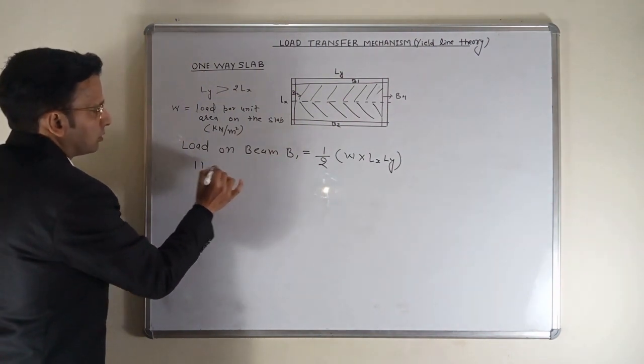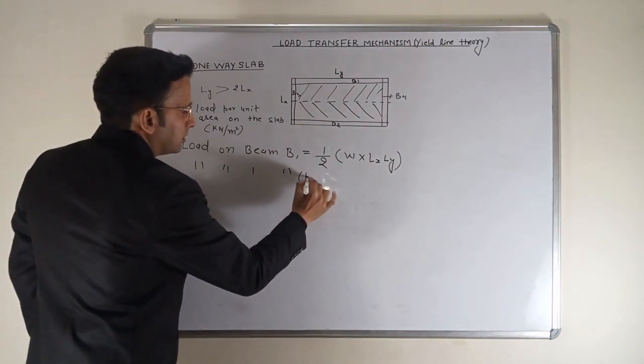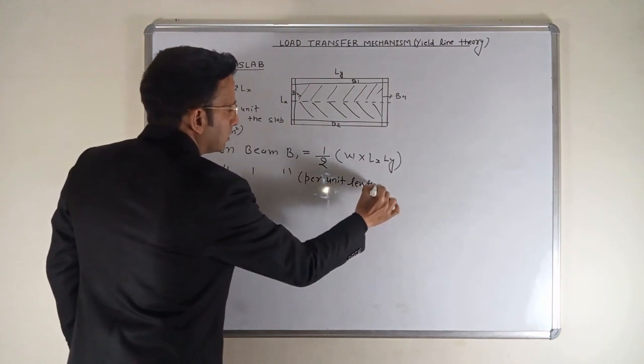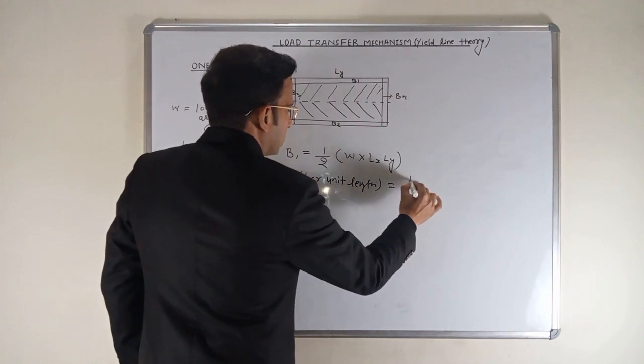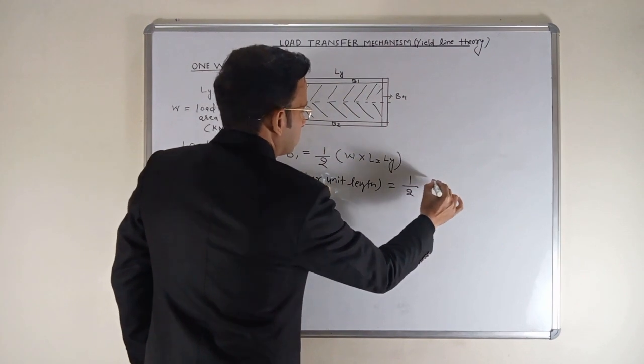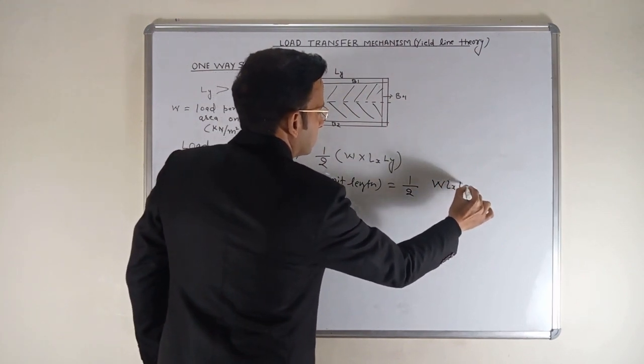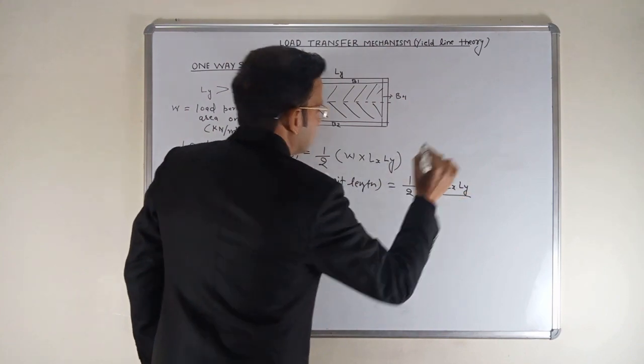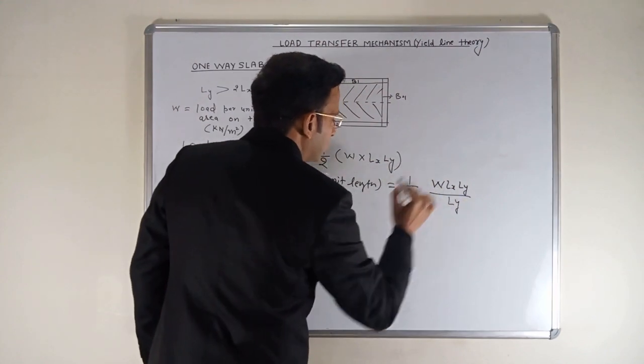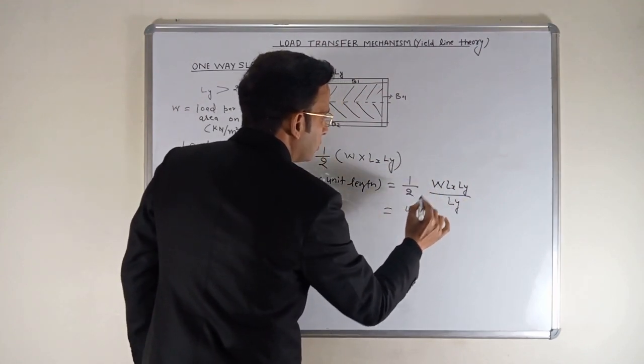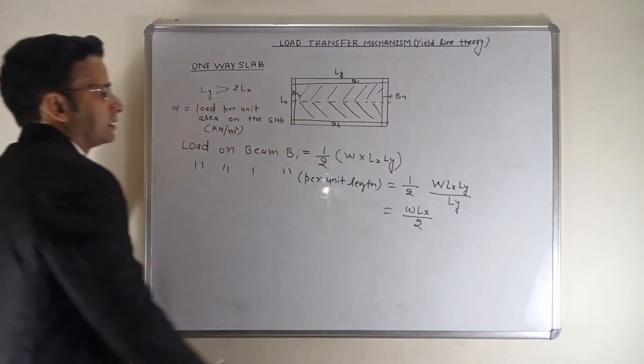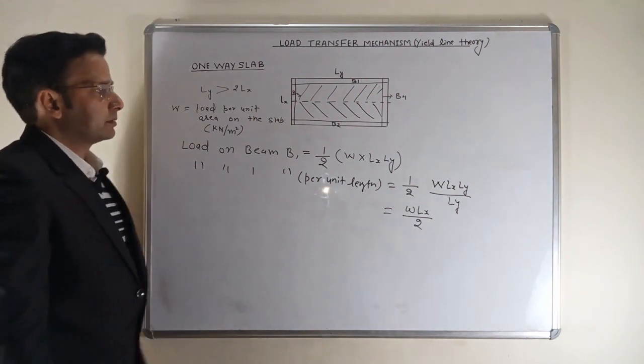If you want to calculate the load per unit length on the beam, which is generally required for designing, then what is the load per unit length? That is half of W times Lx times Ly. This is on length Ly, so per unit length load is divided by Ly, so it becomes W Lx upon 2.